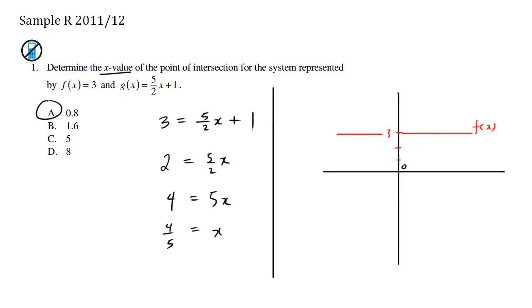Whereas g(x) is 5/2x + 1. It has a slope of 5/2, which is exactly 2.5, plus 1. So the y-intercept is at 1, and it's going to have a pretty steep slope from here to here.